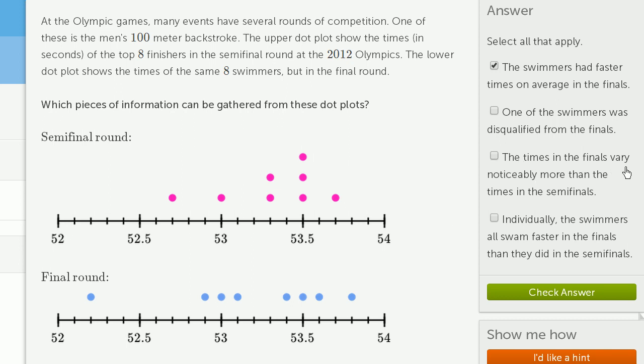The times in the finals vary noticeably more than the times in the semifinals. That does look to be true. We see in the semifinals, a lot of the times were clumped up right around here at 53.3 seconds and 53.5 seconds. The high time isn't as high as this time. The low time isn't as low there. So the final round definitely varies noticeably more.